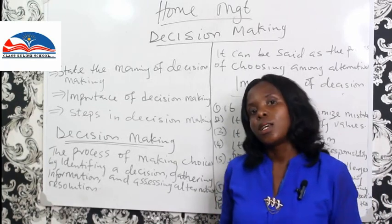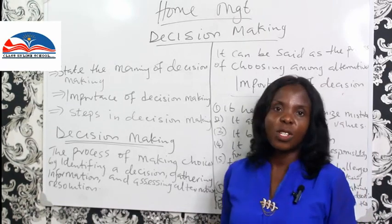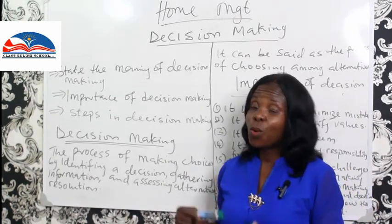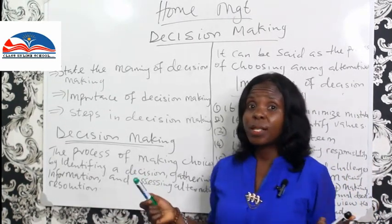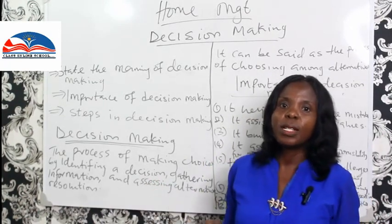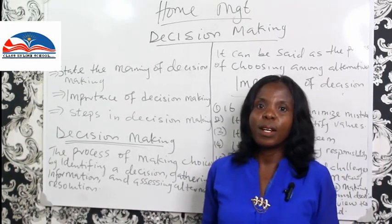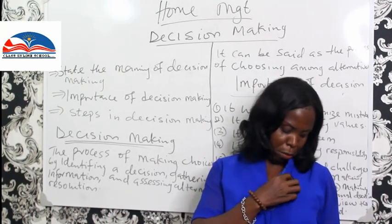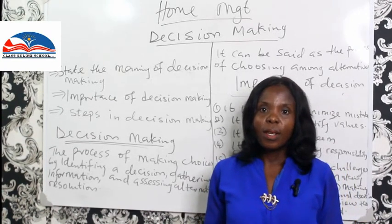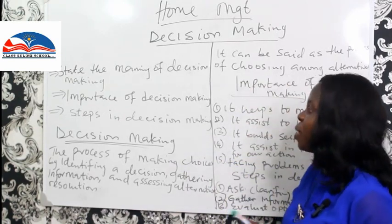We are going to take three objectives for today's class. The major topic is decision making. We are going to look at the meaning of decision making, the importance of decision making in the home, and the steps in decision making. It can equally apply to your business if you want to apply it there, but the home is our major objective for this class.